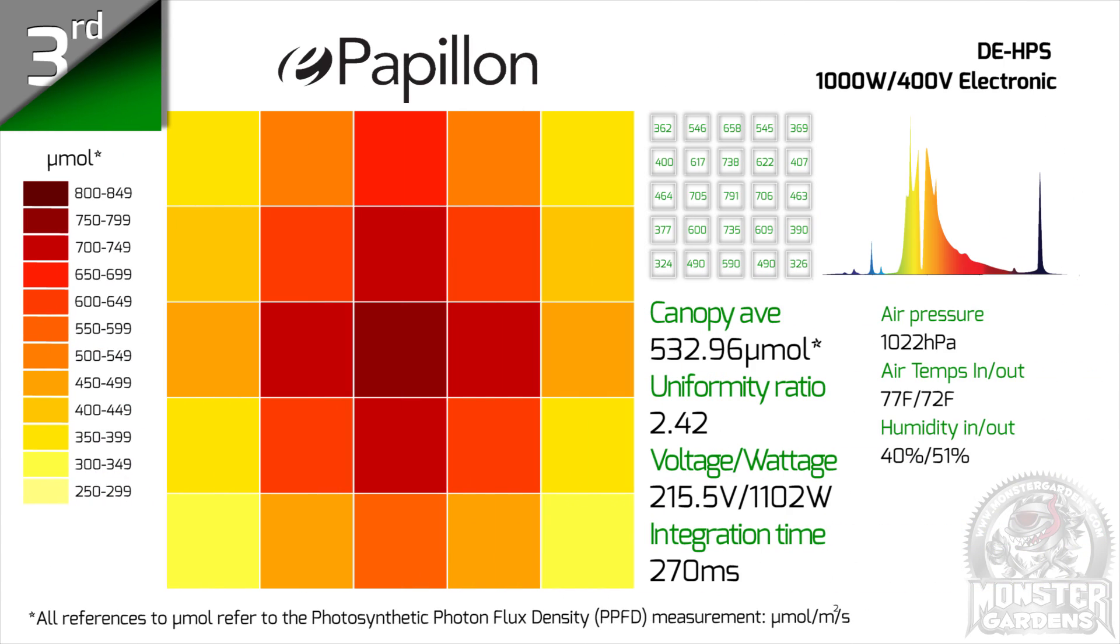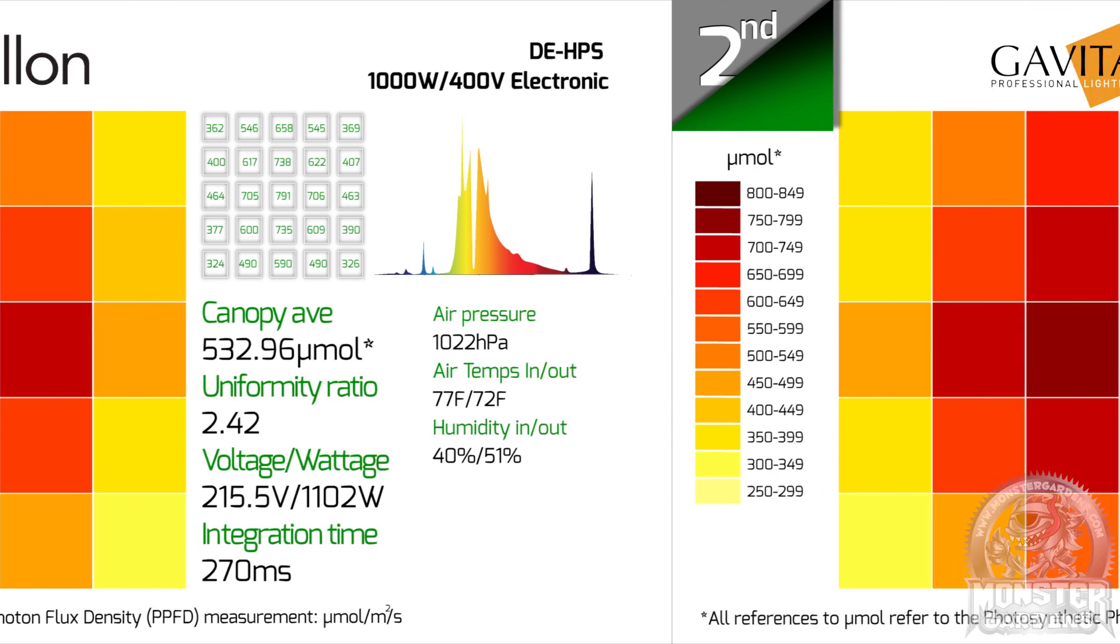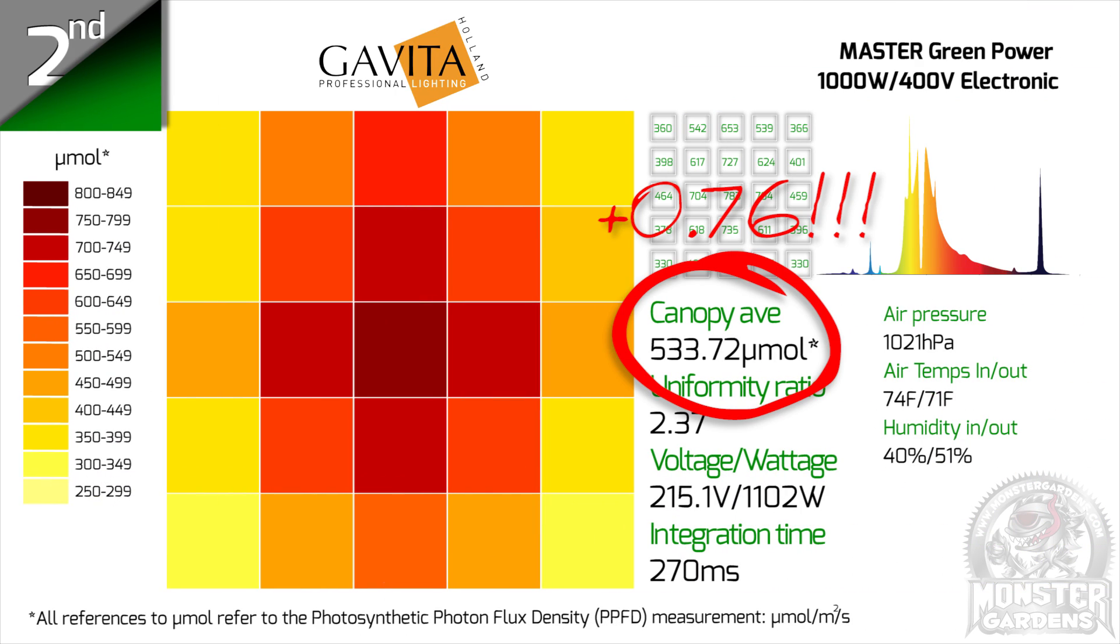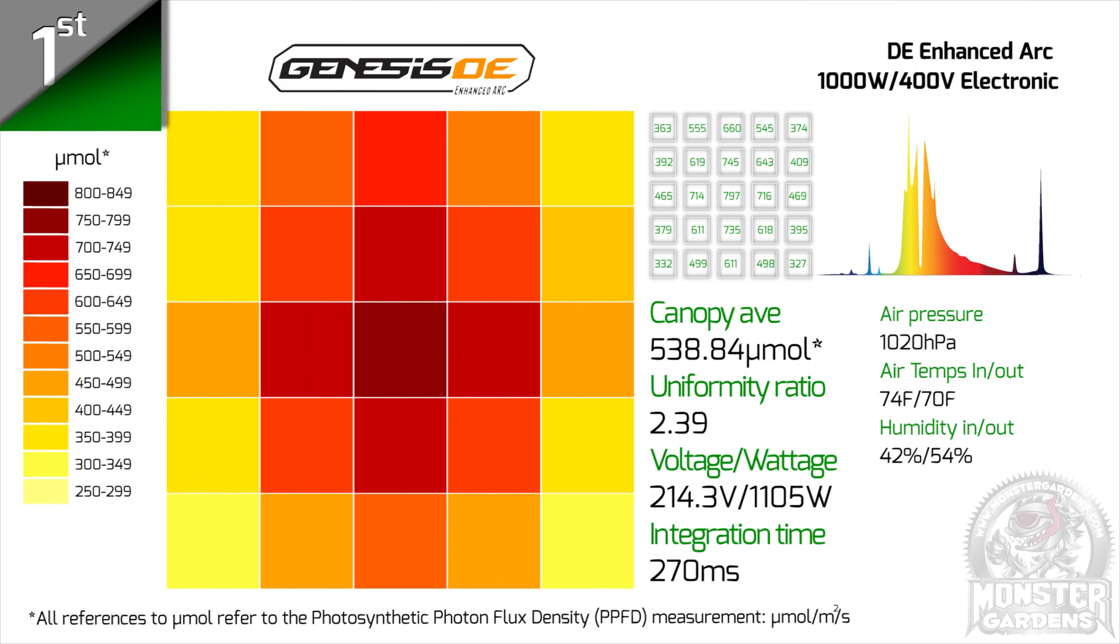In third place was the E-Papillon bulb, with second place going to the Gavita by just 0.76 of a micromole. Which means that the Genesis is the champ, with a margin of victory of just 5.12 micromoles.